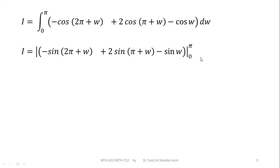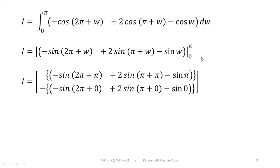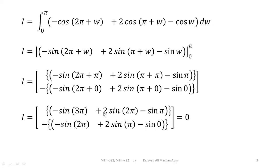In the next step, we will apply the limits — upper limit minus lower limit — using the fundamental theorem of calculus. For the upper limit, we will replace w with pi, and for the lower limit, we will replace w with 0 in each term. After applying the limits and making simplifications, we have minus sin of (3pi) plus 2 sin of (2pi) minus sin of pi, and in the lower bracket, minus sin of (2pi) plus 2 sin of pi minus sin of 0. Each term gives you a zero answer, so the answer of this whole integral is 0.